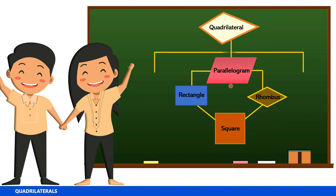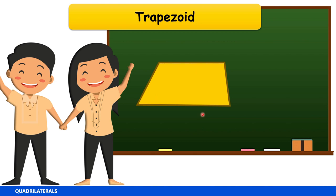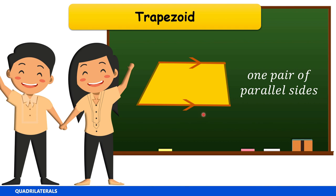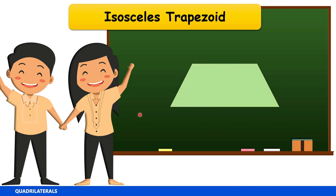Let's talk about kites and trapezoids. A trapezoid is a quadrilateral with one pair of parallel sides that are not congruent. An isosceles trapezoid is a type of trapezoid that has one pair of parallel sides, and at the same time the other two sides are congruent.